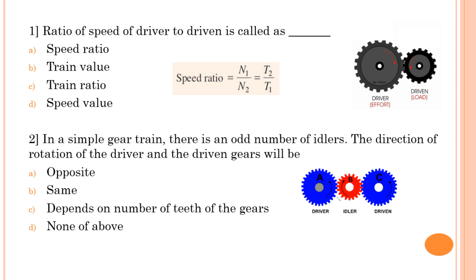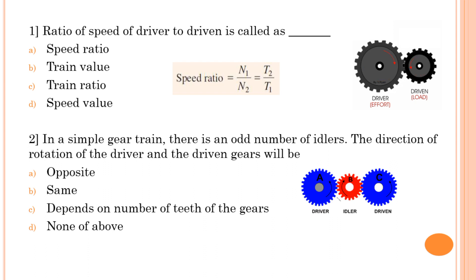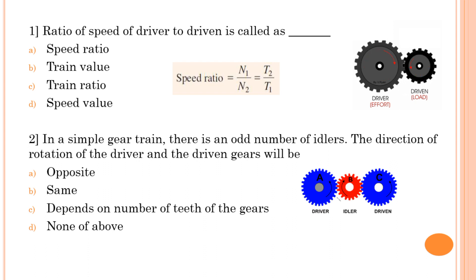Gear C meshes externally with gear B, so C rotates in the opposite direction of B — anticlockwise. Therefore A is anticlockwise, B is clockwise, C is anticlockwise again. The direction of rotation of driver and driven gear is in the same direction for an odd number of idler gears. Option B is correct.